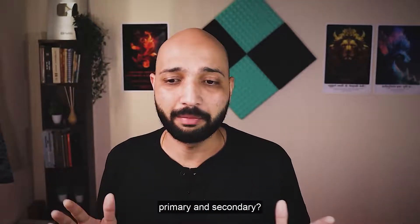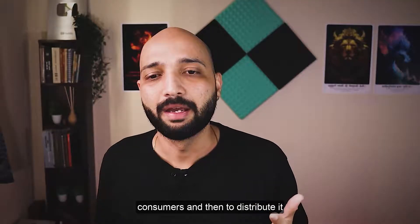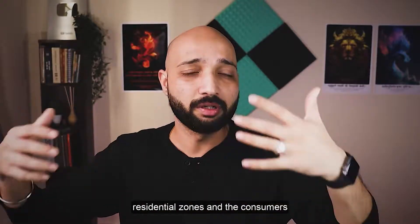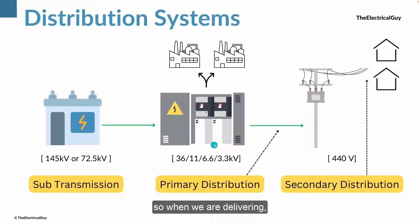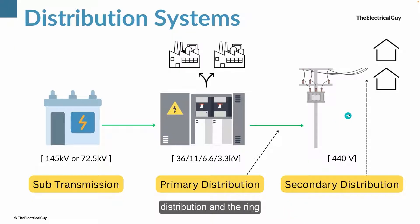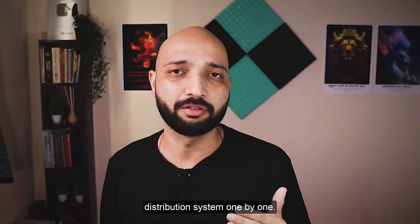Primary distribution is mainly used to supply high-voltage consumers and to feed the secondary distribution network. Secondary distribution delivers power to residential zones and consumers who need low-voltage power. When delivering 11 kV power to the secondary distribution system, there are two main methods used for primary distribution: radial distribution and ring main distribution. So when we say radial or ring main, keep in mind these relate to the primary distribution system.